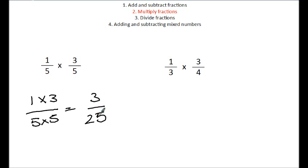Now because 3 isn't a factor of 25 and because 3 is a prime number, we can't cancel this down at all. Looking at the next one, we've got 1 times 3 and 3 times 4. So that's 3 over 12. 3 is a factor of 12. So that means 12 divided by 3 is 4. So that cancels down to 1 quarter.